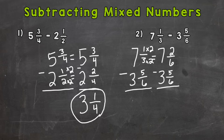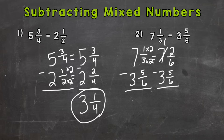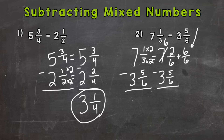Now let's subtract the fractional part: 2/6 minus 5/6. Well, we can't do that because we cannot do 2 minus 5. Just like a whole number subtraction problem, we need to borrow to be able to do the fractional part. So we're going to borrow 1 from the 7, which turns it to a 6, and we're going to add 1 whole to that 2/6. I'm going to write 1 whole as 6/6 so I can add it to the fractional part — they need a common denominator. So 6/6 is 1 whole, just written with a denominator of 6.